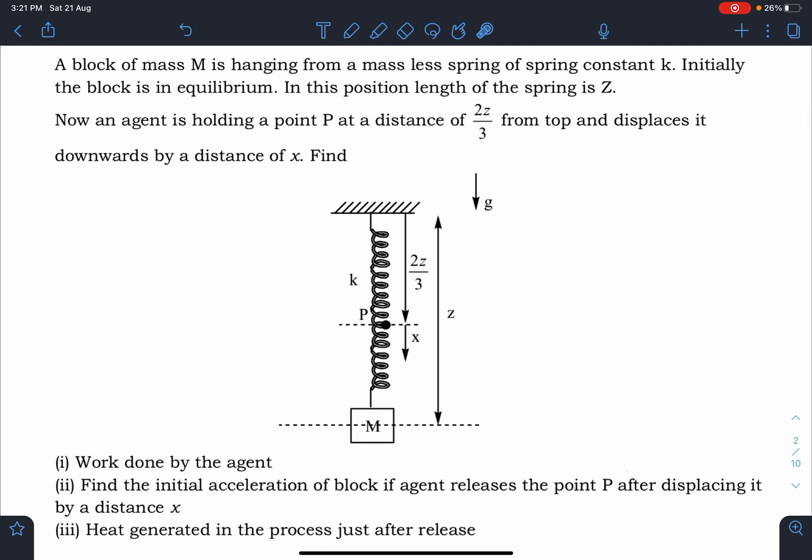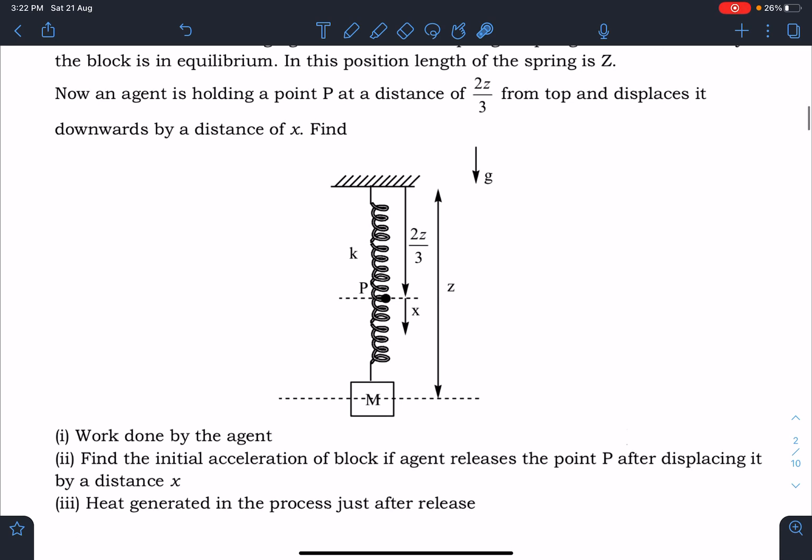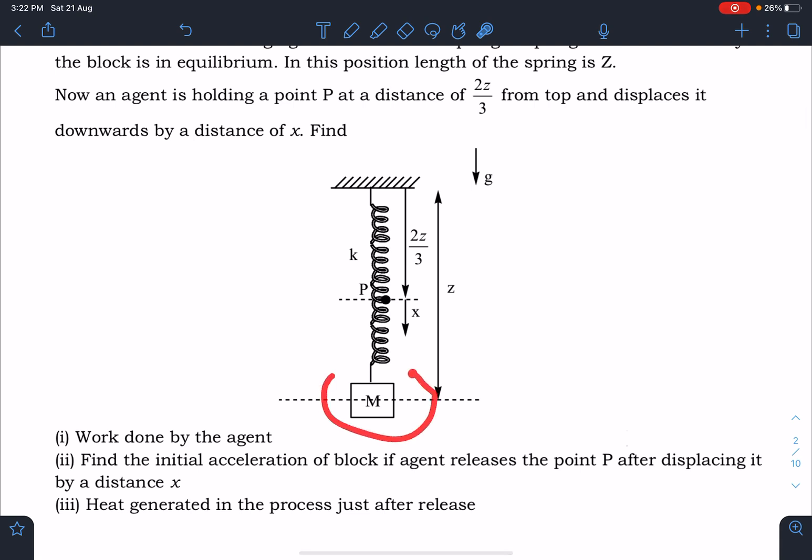Here is the problem statement: A block of mass M is hanging from a massless spring of spring constant k. Initially the block is in equilibrium, and in this position the length of the spring is z. Now an agent is holding a point P at a distance of 2z/3 from the top and displaces it downward by a distance of x. First, we have to find the work done by the agent. Second, find the initial acceleration of the block if the agent releases point P after displacing it by x. Third part is heat generated in the process just after release.